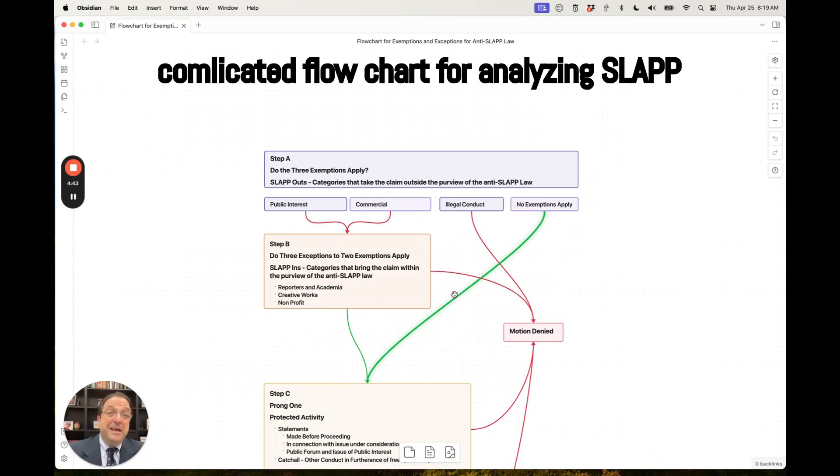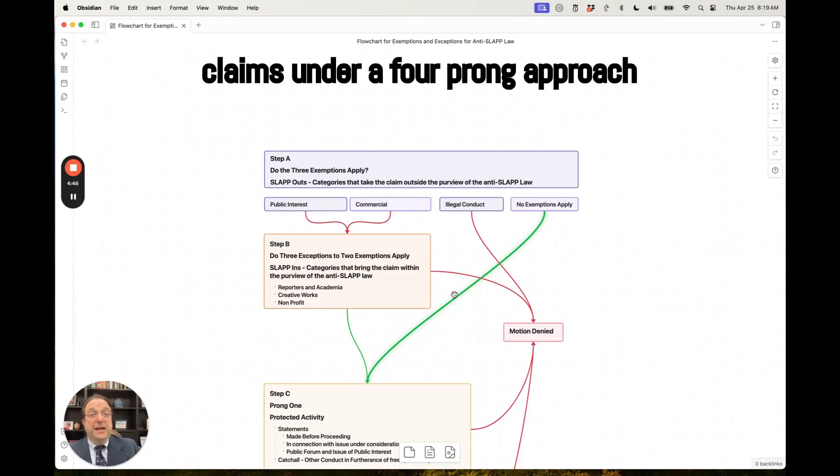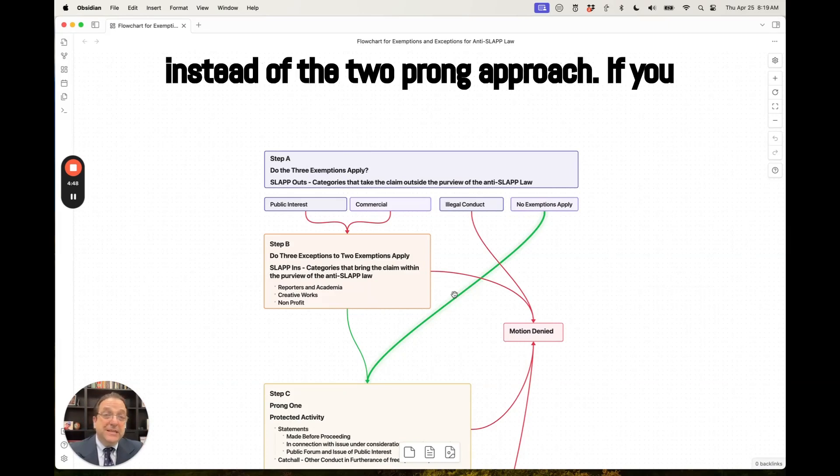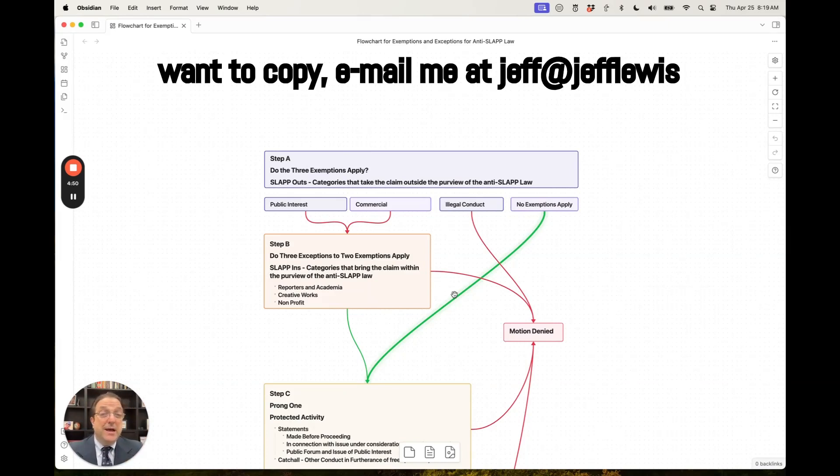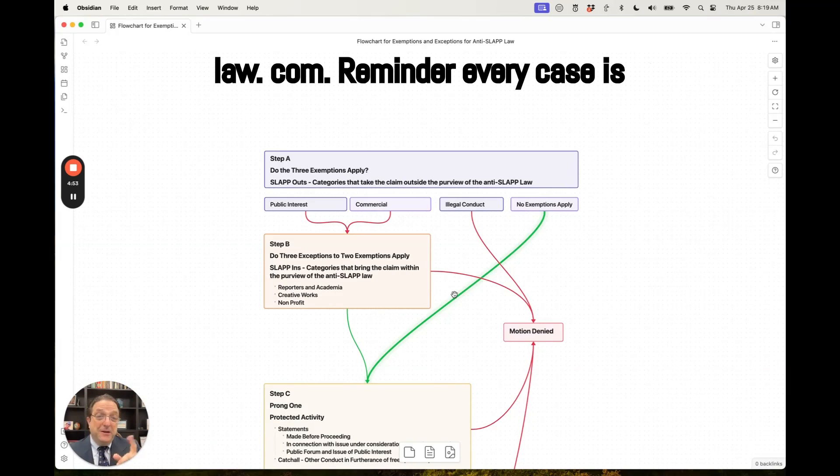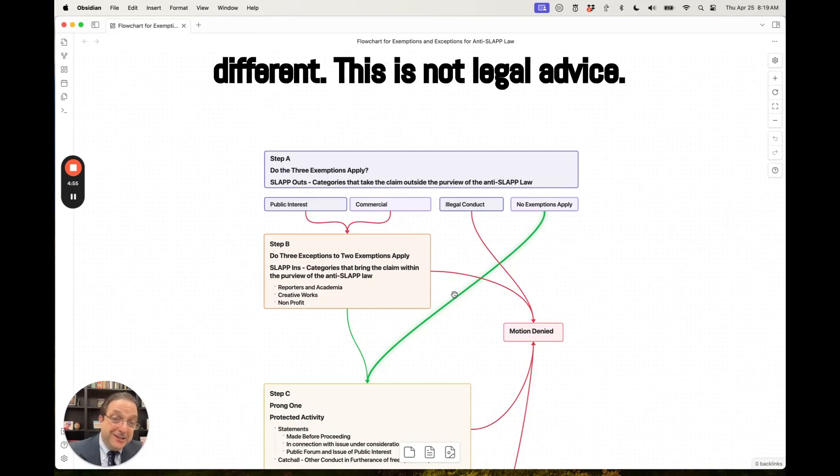So this is my complicated flowchart for analyzing SLAPP claims under a four-prong approach instead of the two-prong approach. If you want a copy, email me at jeff@lewislaw.com. Reminder, every case is different. This is not legal advice.